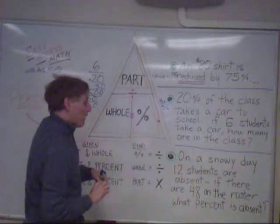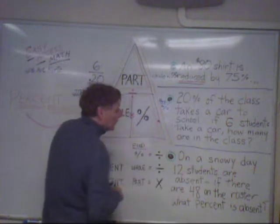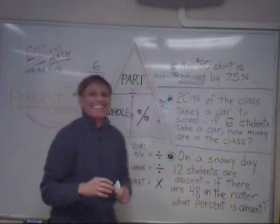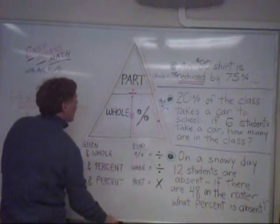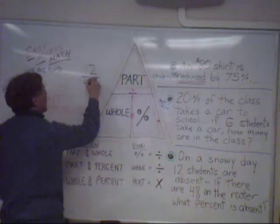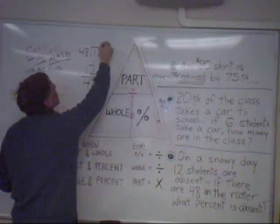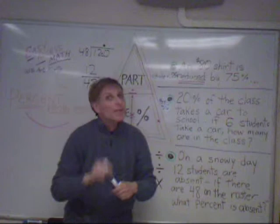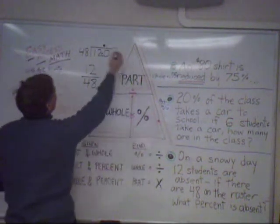Your last type of percent problem is when you have the whole and you have the part. On a snowy day, twelve students are absent. If there are forty-eight students on the roster, what percent is absent? We have the whole and the part. The part goes on top — that's the twelve — the whole is the forty-eight. So we have twelve divided by forty-eight. Keep the decimal point and be sure you put it in above where it goes. Your answer will usually be a decimal, which we can convert to a percent by moving the decimal point two places.